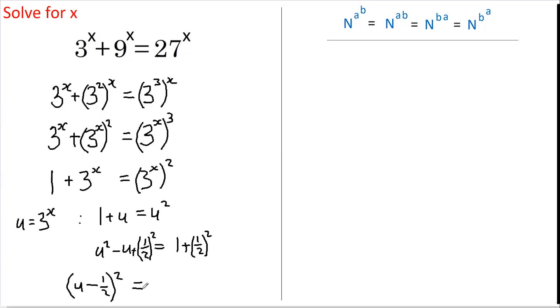And that equals 1 and 1 quarter. Now if we take the square root of both sides, we get that u minus 1 half equals the square root of 5 over 4. This is the same as root 5 over root 4, and if we multiply top and bottom by root 4, we get 2 root 5 over 4.